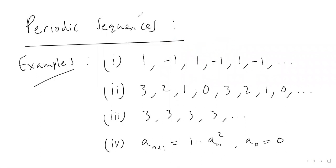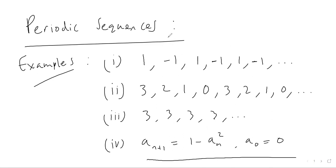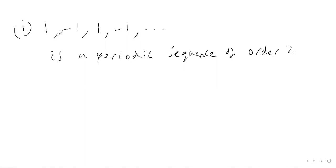This next sequence here is a periodic sequence of order four, because it repeats itself every four terms. And this one here is a periodic sequence of order one — it repeats every single term. We'll also look at why this iterative recurrence relation is actually a periodic sequence as well.